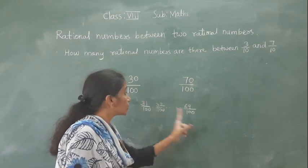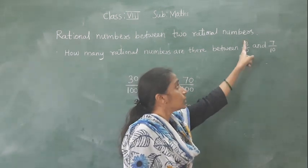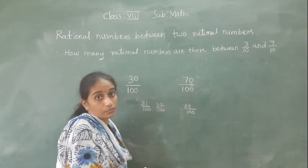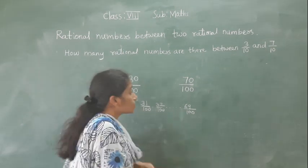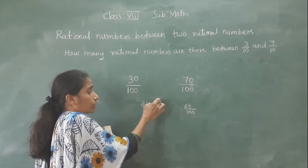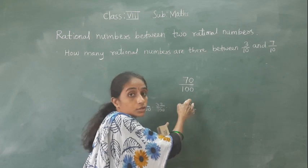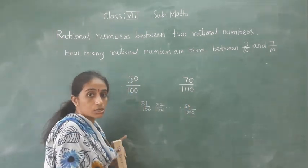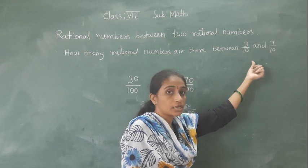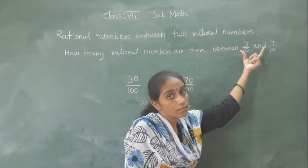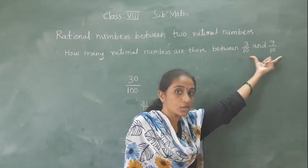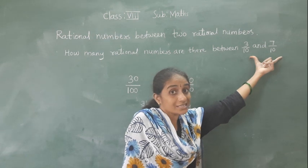So all these numbers — 31 upon 100, 32 upon 100, and so on up till 69 upon 100 — come in between 3 upon 10 and 7 upon 10. The numbers 4 upon 10, 5 upon 10, and 6 upon 10 are also rational numbers between these 2 rational numbers. So we cannot say a definite number of rational numbers between them. Understood, everyone?